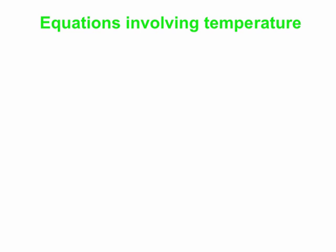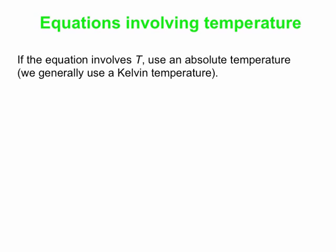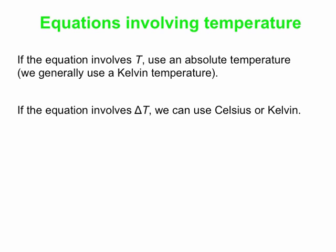And here's something to remember if you have equations that involve temperature. Then if your equation has a T in it, not a delta T, but a T, then you want to use an absolute temperature. And generally we're going to use the Kelvin scale. If your equation has a delta T in it instead, then you can use Celsius or Kelvin because, of course, a change in temperature is the same on either the Celsius or the Kelvin scales. So when we're doing our work, we're generally going to stick with Celsius or Kelvin. But if you've got a T in your equation, use Kelvin. Delta T, you can get away with either one.